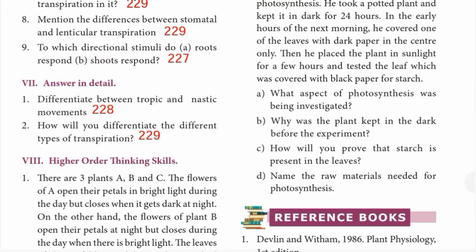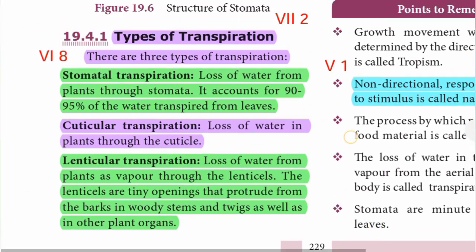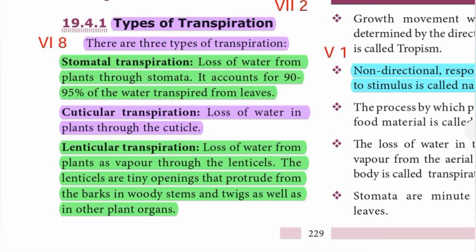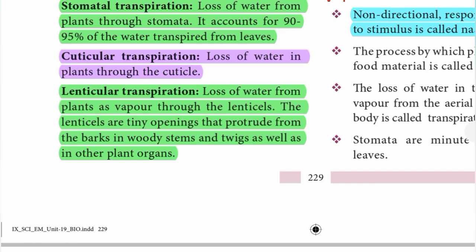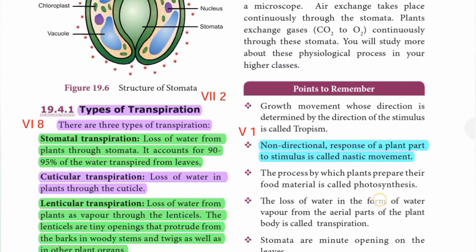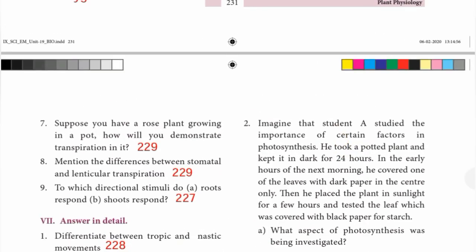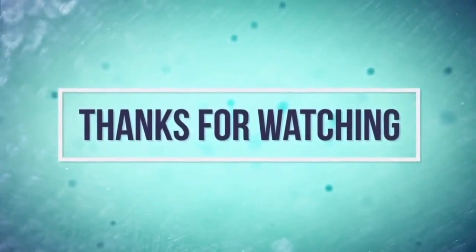Second question: how will you differentiate the different types of transpiration? From page 229, there are three types: stomatal transpiration - loss of water from plants through stomata, accounts for 90 to 95 percent of water transpired from leaves. Cuticular transpiration - loss of water from plants through the cuticle. Lenticular transpiration - loss of water from plants as vapor through the lenticels, which are tiny openings in woody stems, twigs, and other plant organs. That is the lesson and book back exercise over. Thank you for your support!